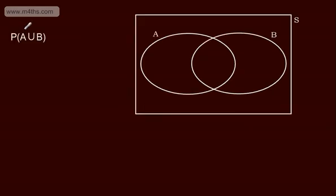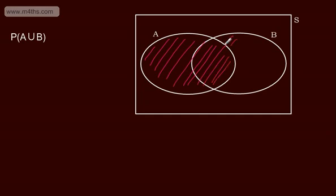The probability of A union B — we read this as A union B — is the probability of A happening, or the probability of B happening, or them both happening. So when we shade that, all we're looking for is everything in A and everything in B. We just end up with all of this right here, and we read this as the probability of A union B.